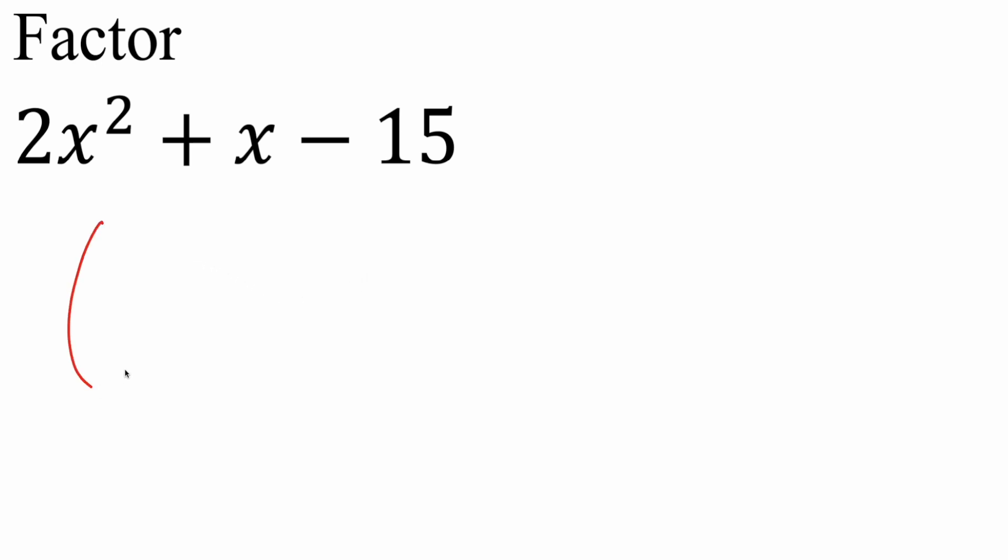So we're going to split this up into two binomials. I'm gonna put our parentheses. And this piece is 2x squared, and there's only one way to get 2x squared, and that's by 2x and x.